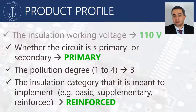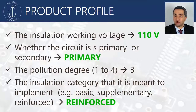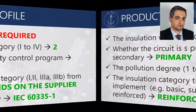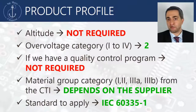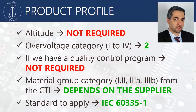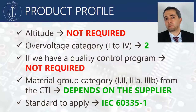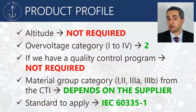Our product profile is: insulation working voltage 110V, the circuit is only primary, the pollution degree is 3, and we decided to implement a reinforced insulation. Altitude parameters are not required for Creepage distance, and overvoltage category is 2. As we mentioned earlier, for household equipment, a quality control program does not bring any benefits in terms of Creepage distance.